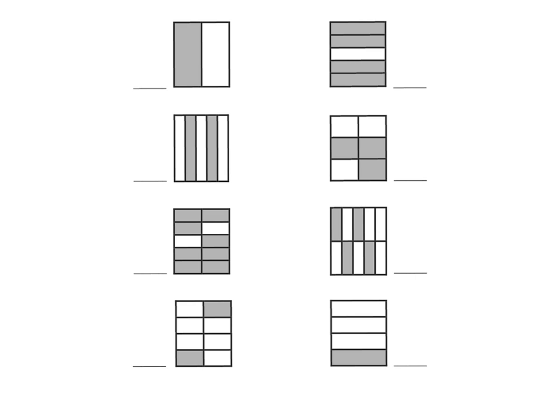Let's do some actual examples. Let's start by identifying the fractions for each of these figures. Right up here we can see that is one-half. And then right here, we can see there's one, two, three, four, five pieces, and four-fifths are shaded in.